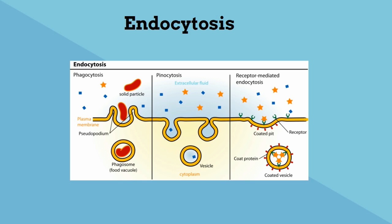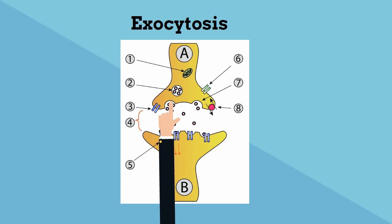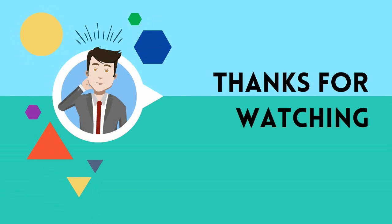The cell brings in larger objects into the cell by engulfing the object. And finally, during exocytosis the cell expels an object out of the cell. For example, this neuron uses exocytosis to expel the neurotransmitters that are enclosed in a vesicle. Again, this requires energy. Thanks for watching, and MooMoo Math uploads a new math and science video regularly.